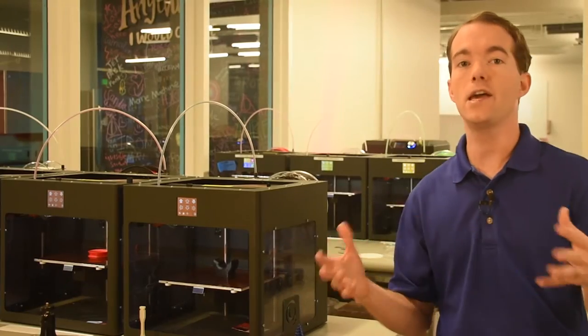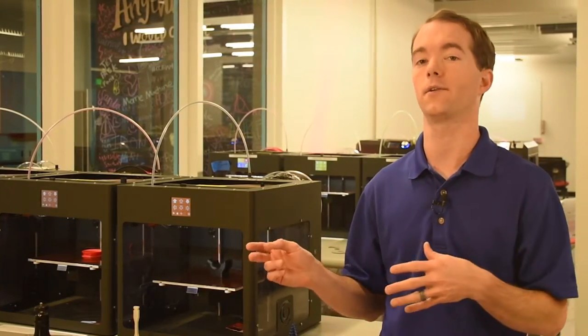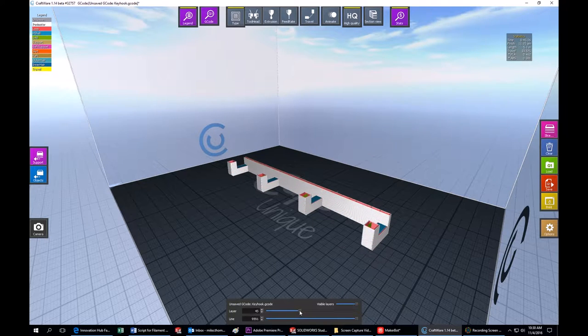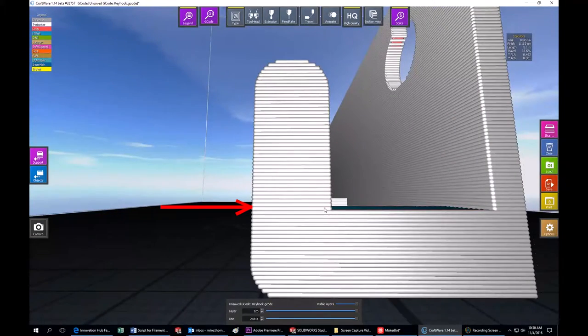Someone came in the other day with a key hook that they downloaded off the internet, and I told them to go redesign it, and here's why. The quickest way to print it would be like this. No support required. However, these hooks would want to snap right here, and that kind of defeats the purpose of a hook because it's now just a peg.